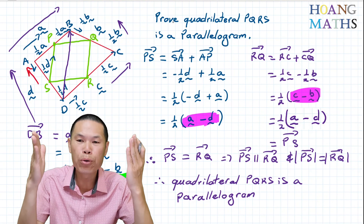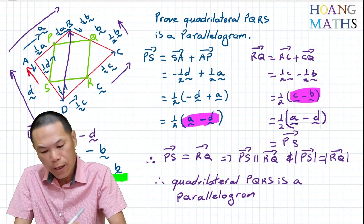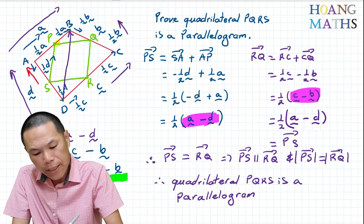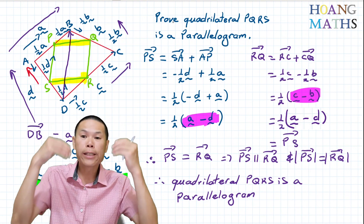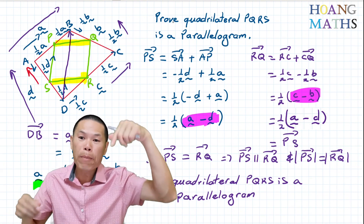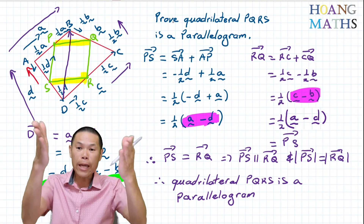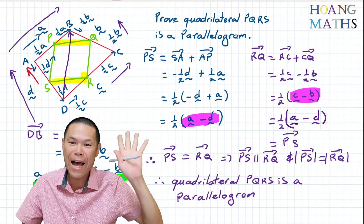Please try to prove it yourself by proving that vector PQ is equal to vector RS — see how you go and let me know in the comments below. Thank you so much for watching. Bye.